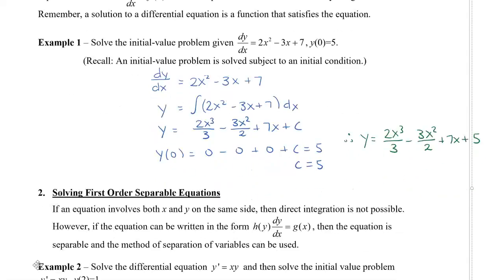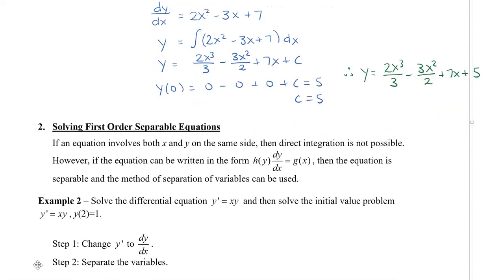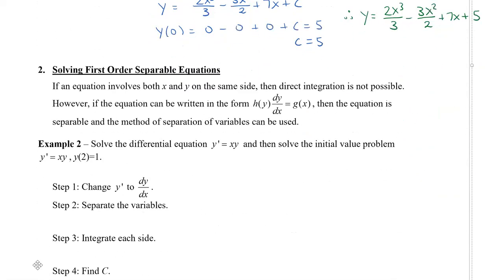Next, we're going to look at what happens when both x and y are on the same side of the equal sign. When this happens, direct integration is not possible. However, if we can write the equation in the form where h of y times dy/dx equals g of x, then the equation is separable and the method of separation of variables can be used. This means we can move the y to one side and the other side will be dependent on x.